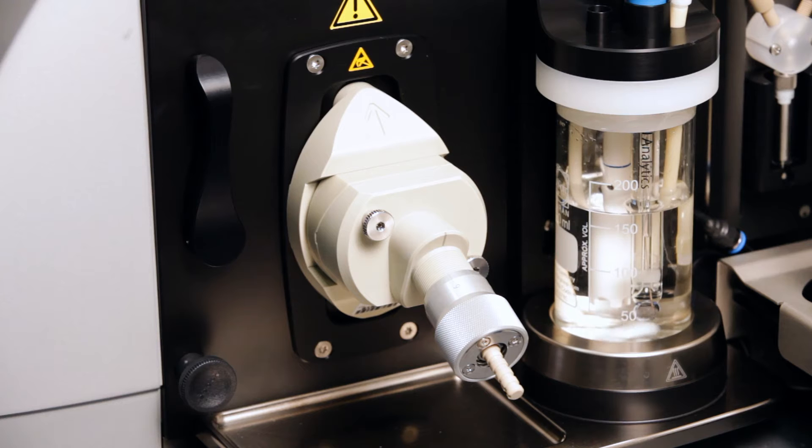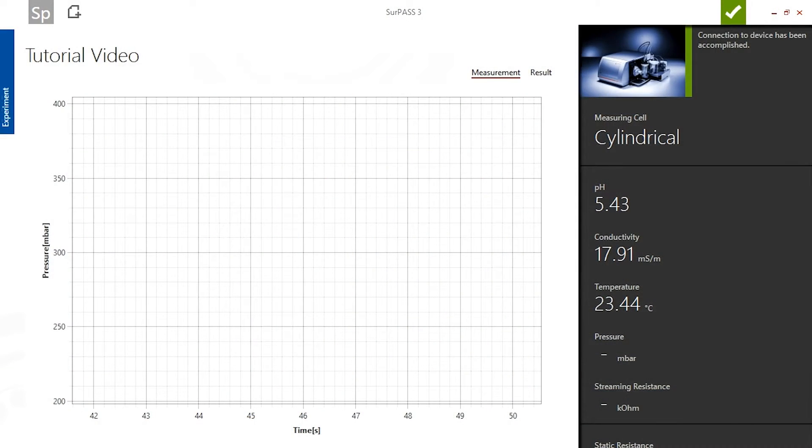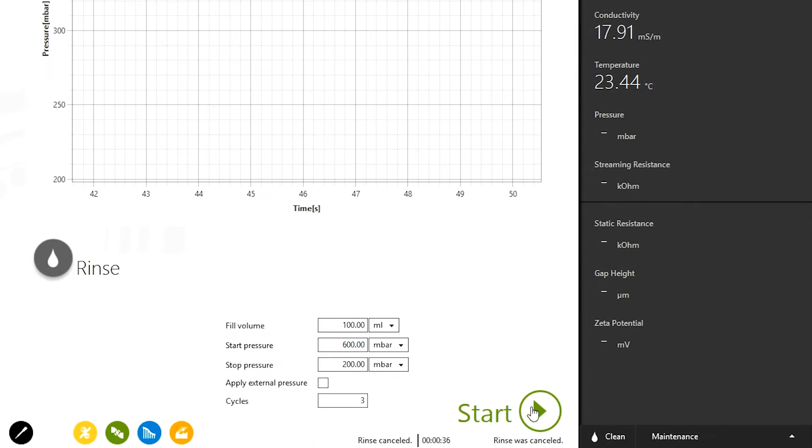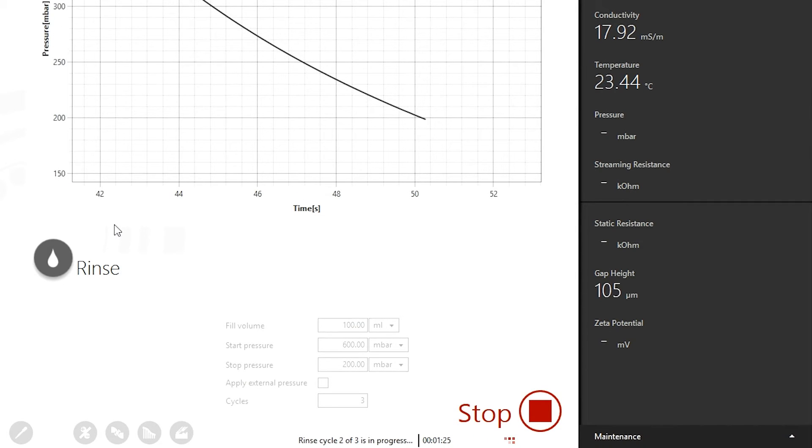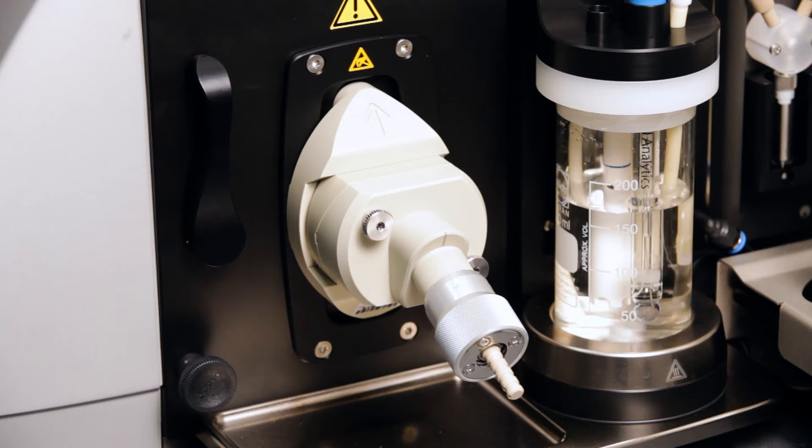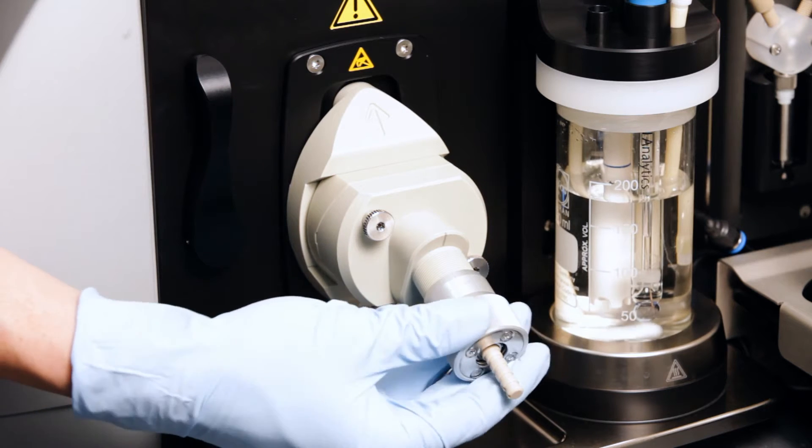The cylindrical cell is then recognized by the SURPASS III software. Use the rinse cycle to adjust the compression of the fiber sample while filling the cell with measuring liquid. To adjust the compression of the fiber sample, rotate the adjustment knob clockwise.